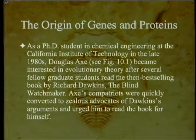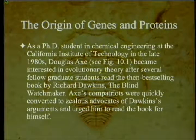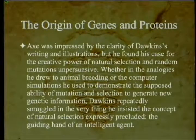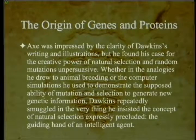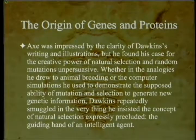As a PhD student in chemical engineering at the California Institute of Technology in the late 1980s, Douglas Axe became interested in evolutionary theory after several fellow graduate students read the then best-selling book by Richard Dawkins, The Blind Watchmaker. Axe's compatriots were quickly converted to zealous advocates of Darwin's arguments. Axe was impressed by the clarity of Dawkins' writing and illustrations, but found his case for the creative power of natural selection and random mutations unpersuasive.